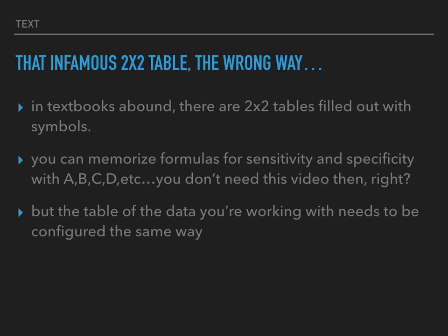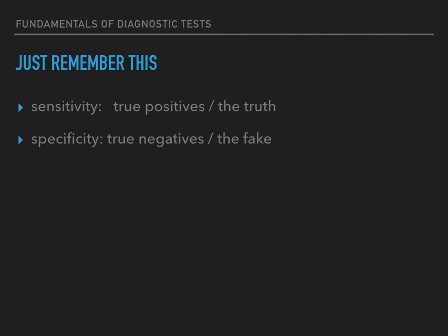In many biostatistics review books, there's an infamous 2x2 table filled out with A, B, C, D — you just memorize those formulas. But the problem is that every table you look at needs to be configured the same way, with rows and columns meaning the same things, and that doesn't always work out. What I want you to remember is: sensitivity is true positives over the truth, and specificity is true negatives over the fake. The truth is everything positive according to the gold standard; the fake is everything negative according to the gold standard.